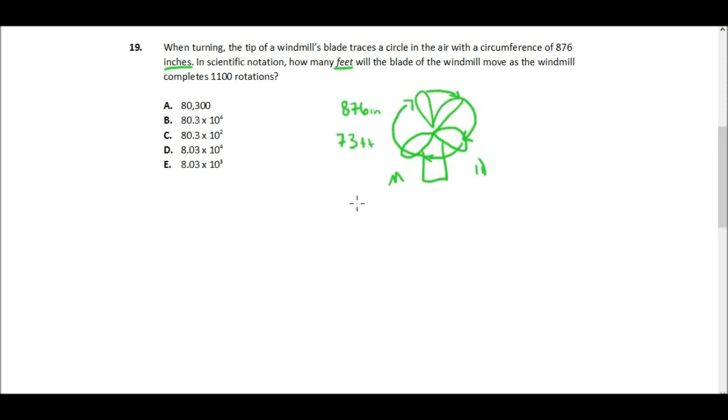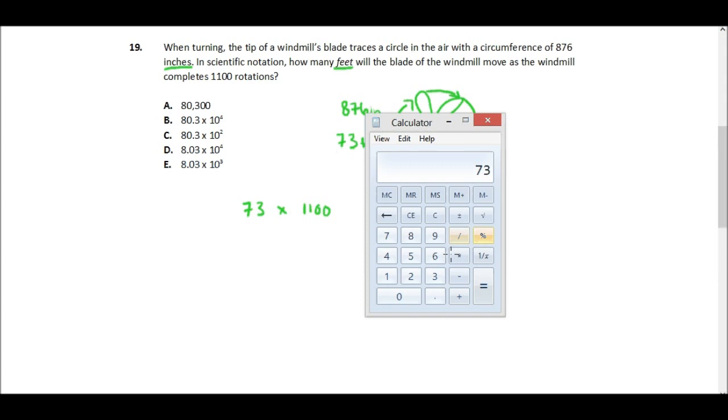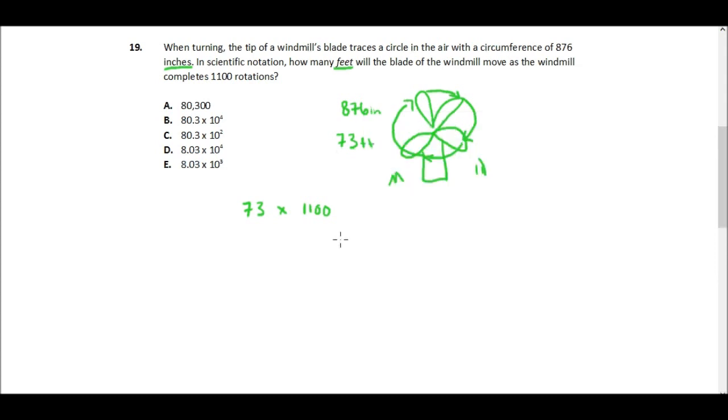So all the way around this circle is 73 feet, but that's not our answer either, because we need to know how far the windmill blade will move in 1,100 rotations. So we'll take 73 times 1,100, and that equals 80,300.